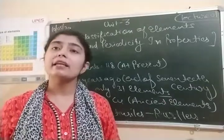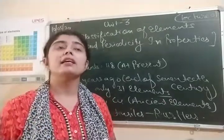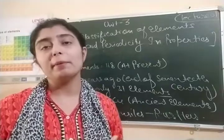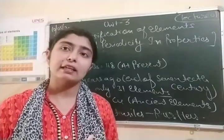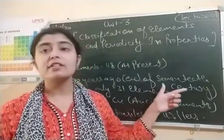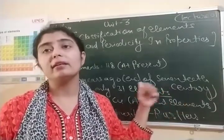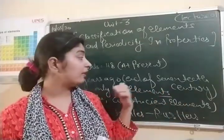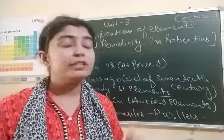But were 118 elements always present in our environment from the very beginning? No, that was not the case. So, at the end of the 17th century, only 31 elements were present in the environment.